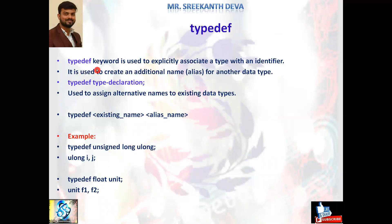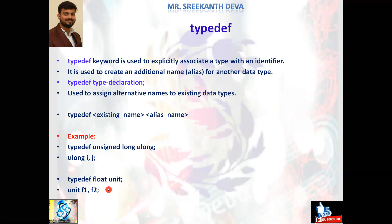The typedef keyword is used to explicitly associate a type with an identifier. It is used to create an additional name or alias for another data type. The syntax is: typedef existing_name alias_name. For example, typedef unsigned long ulong — instead of writing unsigned long every time, you can use ulong. You can give additional names like i, j and use them throughout the program as unsigned long type. Similarly, typedef float unit lets you use 'unit' as a floating-point type for variables like f1, f2, and so on.